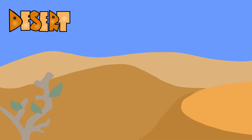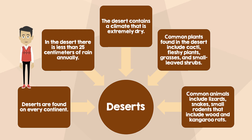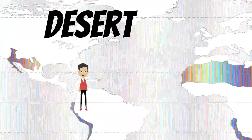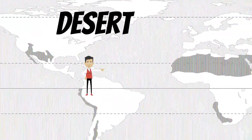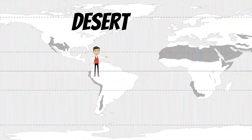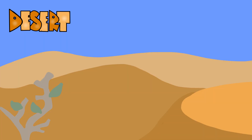Deserts are found on every continent. In the desert, there is less than 25 centimeters of rain annually. The desert contains a climate that is extremely dry.